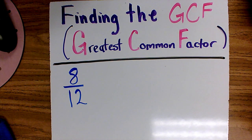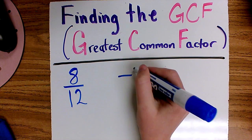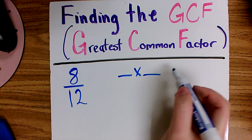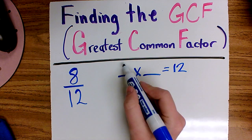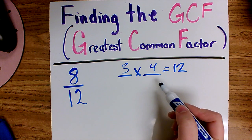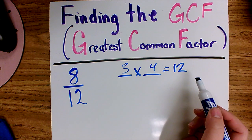We've learned that factors are the numbers that you multiply together to get a product, such as 3 and 4. 3 and 4 are factors of 12.